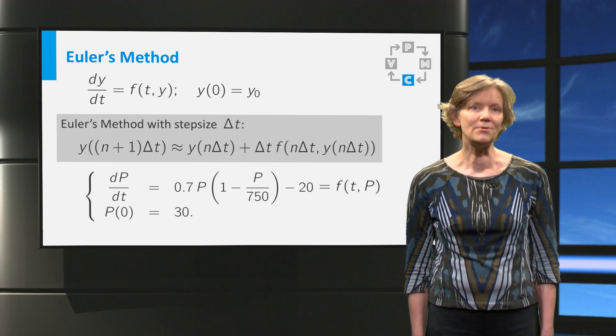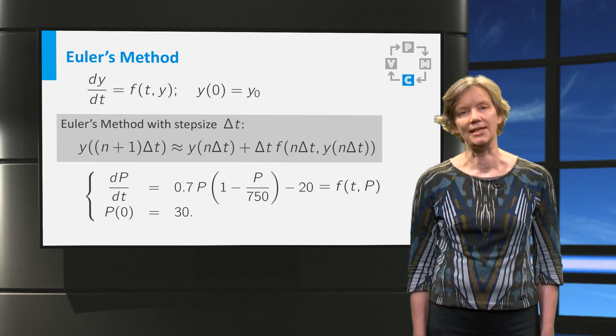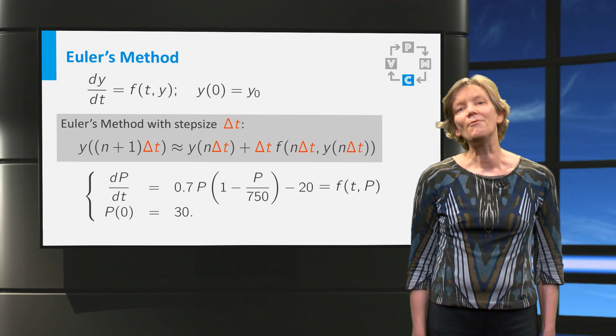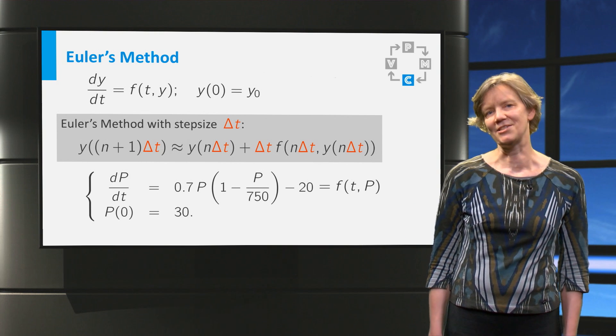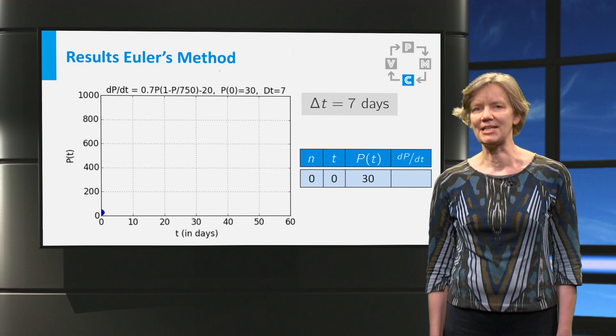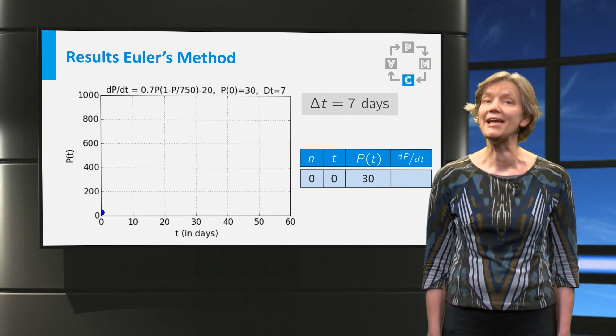To apply Euler's method, we also need a step size, delta t. Now we are going to experiment to see what is an appropriate step size. First we try a step size of a week, delta t equals 7 days.